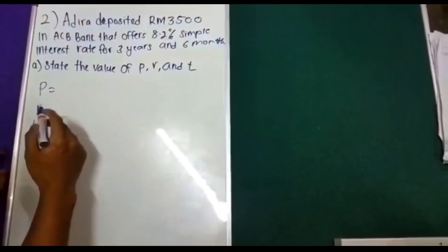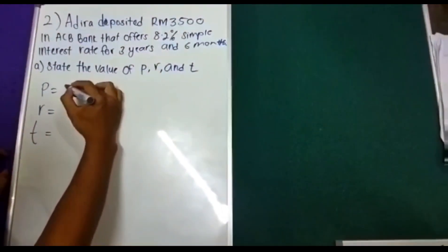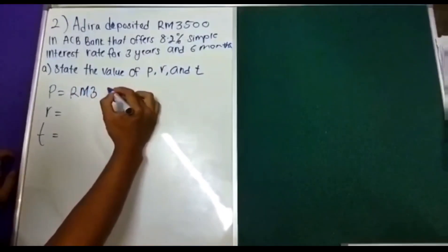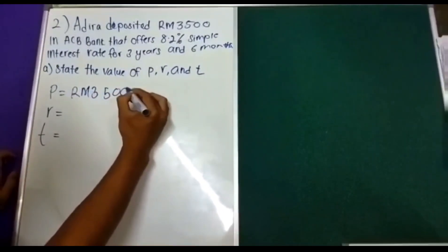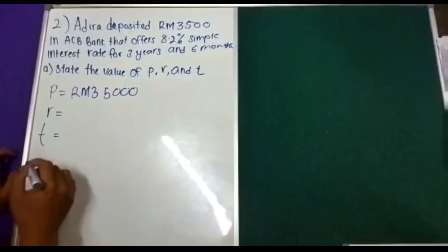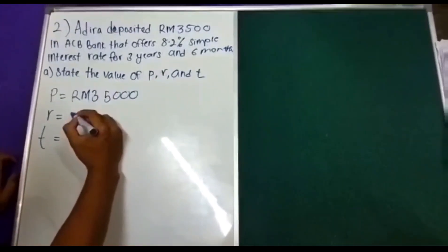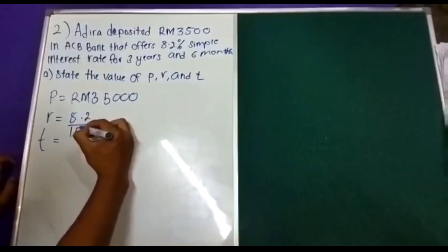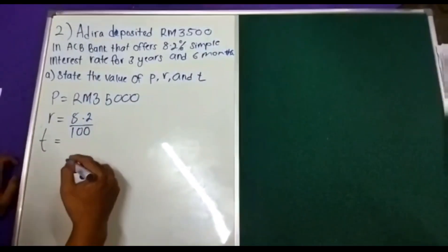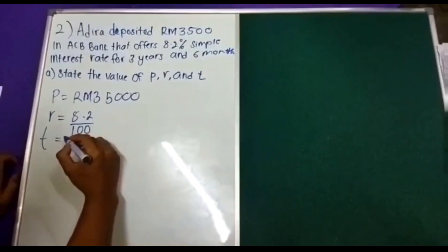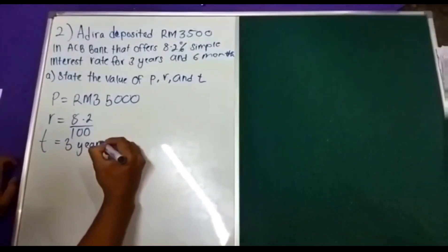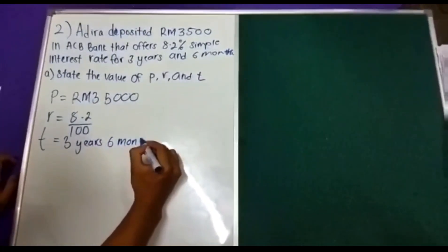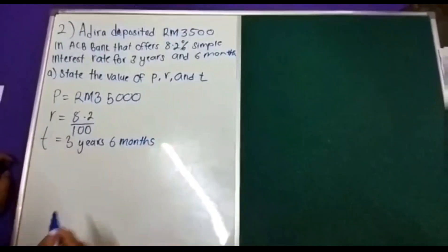So, the value of P is RM3,500, R is 8.2%, and T is 3.5 years.